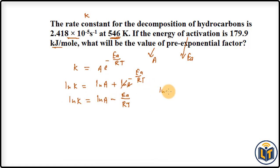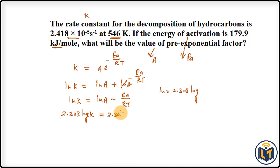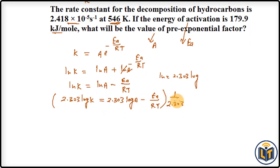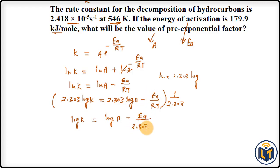We can convert the natural log form into log base 10 using ln = 2.303 × log. This gives: 2.303 log K = 2.303 log A − Ea/RT. Dividing through by 2.303, we get the simplified form: log K = log A − Ea/(2.303RT). This is the formula we will use to calculate A.